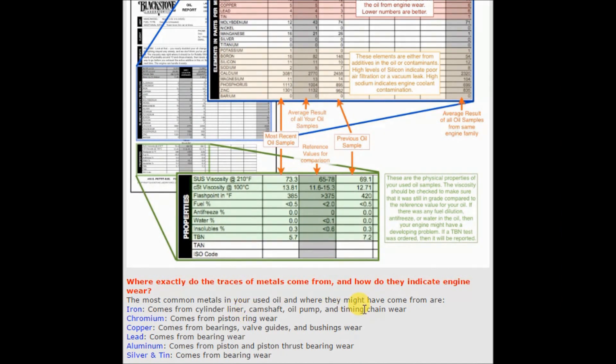The particles left behind in the oil that are getting measured - where they're coming from in the motor. Iron comes from your cylinder liner, camshaft, oil pump, and timing chain. Chromium is basically from around the piston rings. Copper comes from your bearings, valve guides, and bushing wear. Aluminum comes from the piston and piston thrust bearing wear. Silver and tin come from bearing wear.